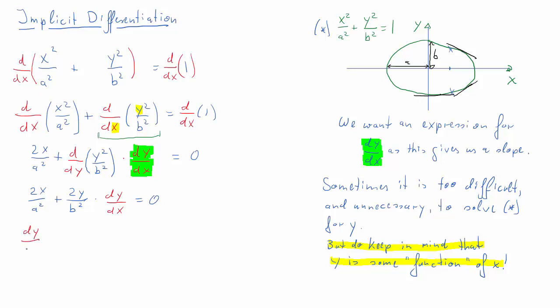This equation can now be solved for dy over dx. So we get dy over dx is equal to negative 2x over a squared times b squared over 2y. And with a little simplification and rearrangement we get minus x over y times b squared over a squared. So this is now the algebraic expression for the slope on our ellipse.